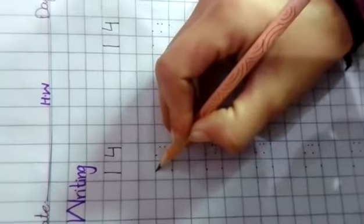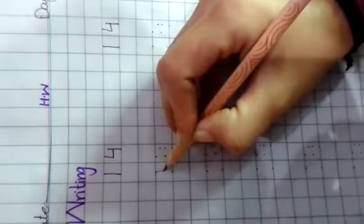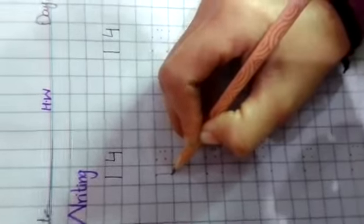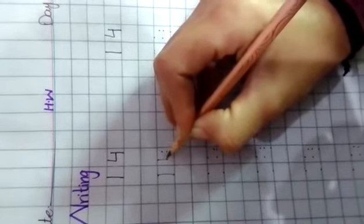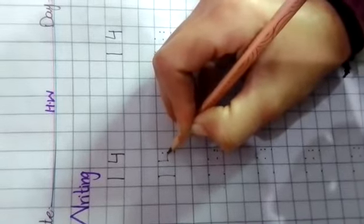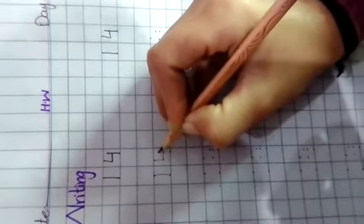Start from the top. Draw a standing line down. Go back to the top. Draw a standing line down till middle. Go forward to the right. Then again make a standing line.